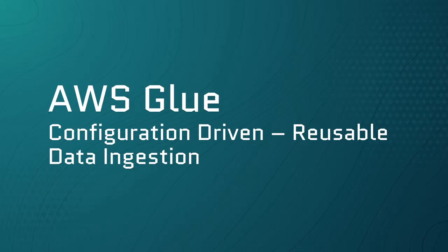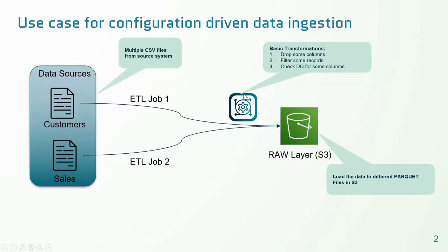Welcome to today's session. In this video we will learn to create configuration-driven reusable data engine pipelines using AWS Glue. Let us look at a sample use case in which creating a configuration-driven data engine solution will be beneficial. In many real-world scenarios we receive more than one file from source systems, and there will be basic transformations to be applied like dropping some columns and filtering out unwanted records.